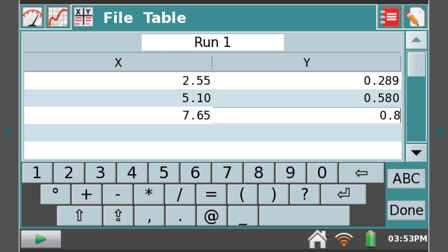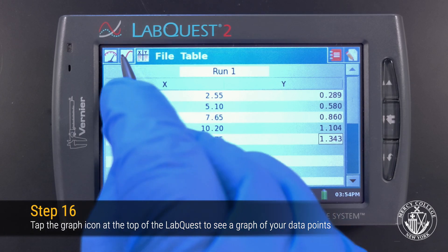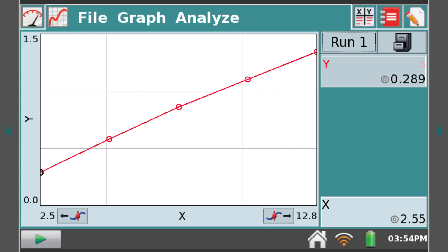Enter the remaining concentrations and absorbance values for your standards from your data sheet. Click Done, and then click on the Graph tab at the top of the LabQuest to see a graph of your data.